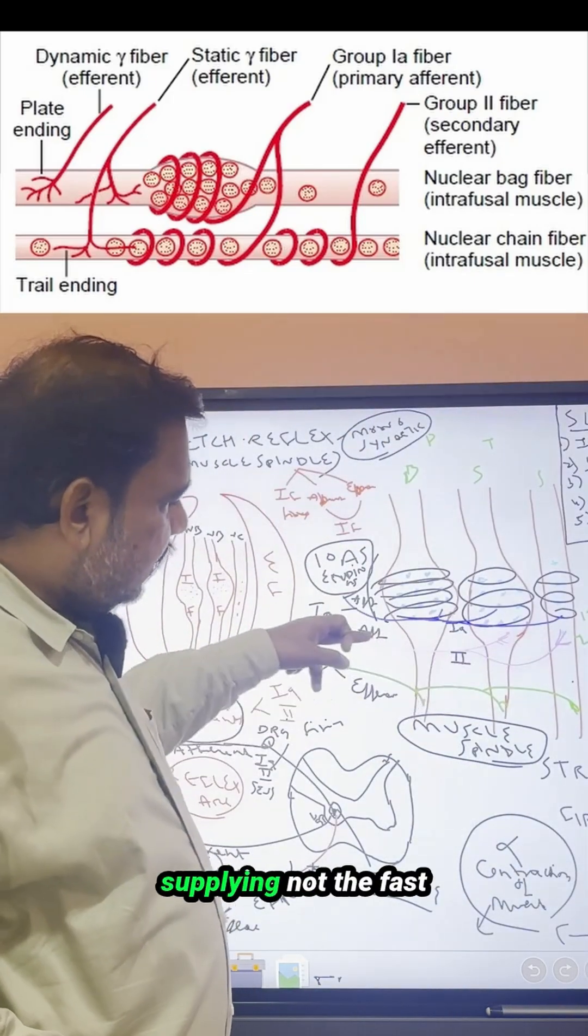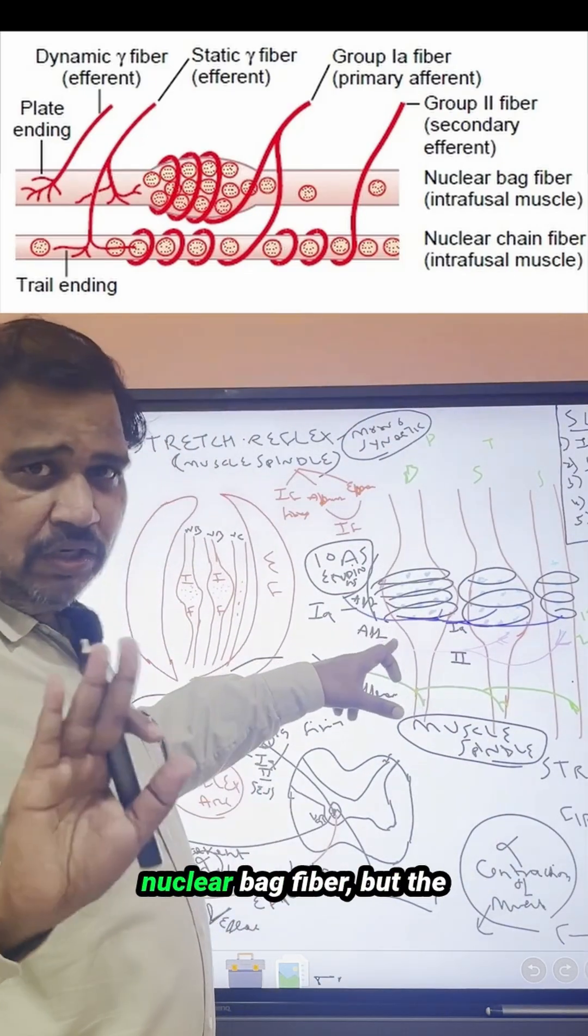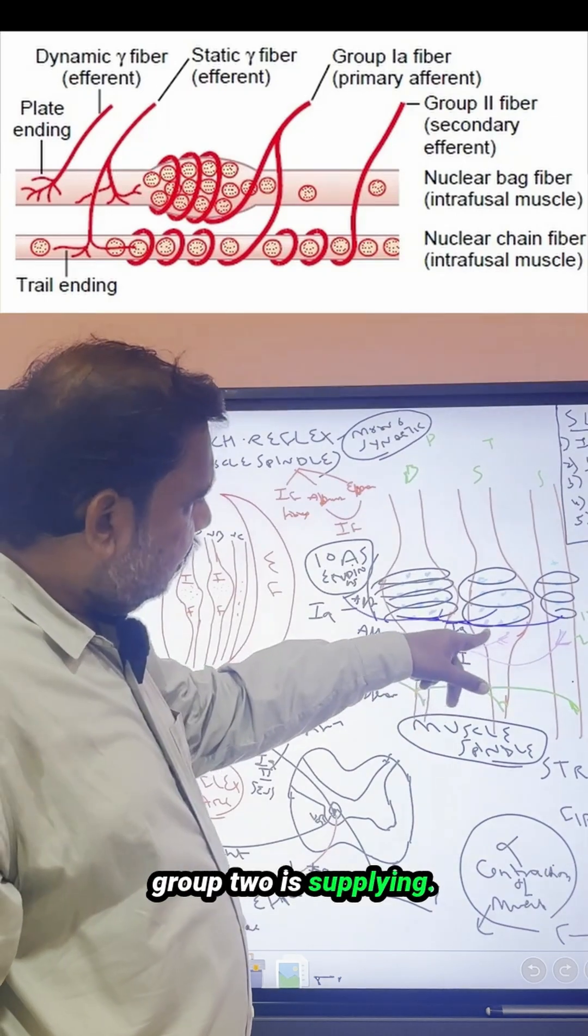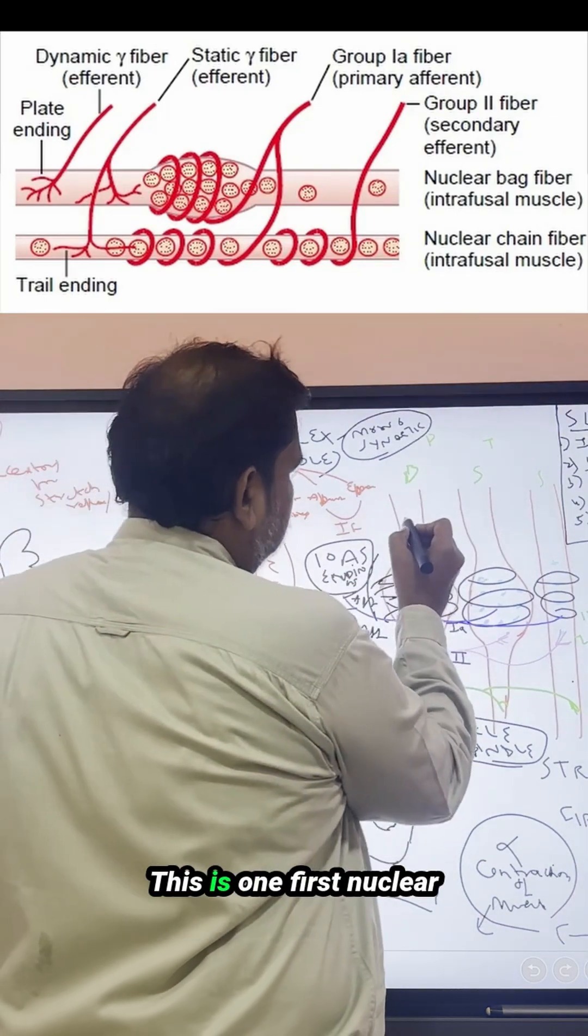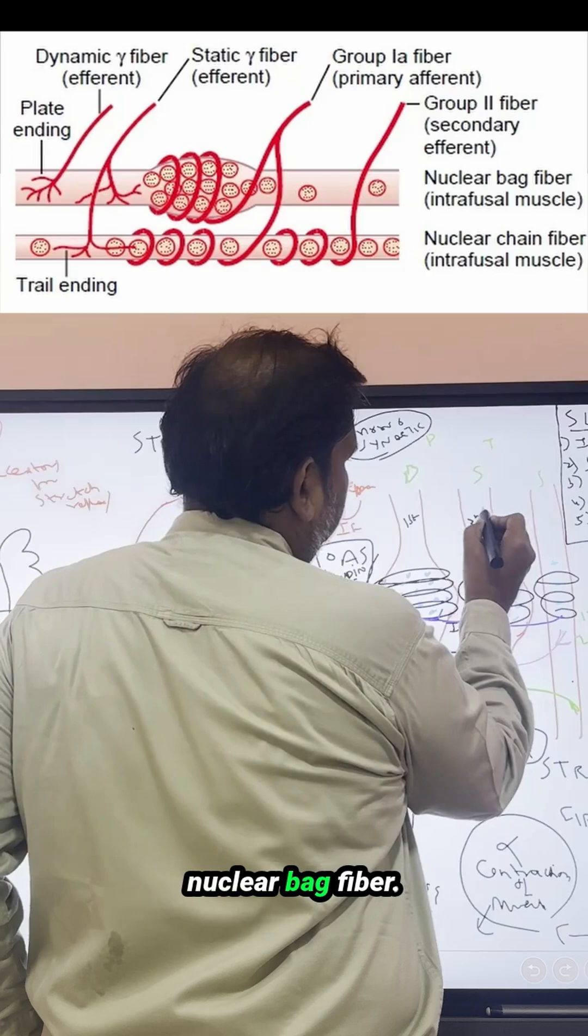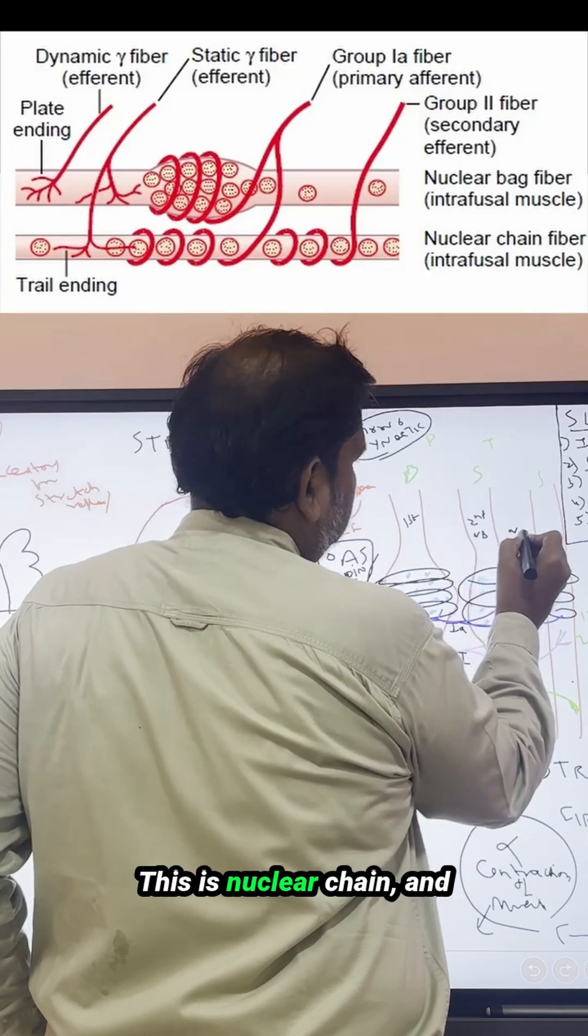This group two is supplying not the first nuclear bag fiber, but the group two is supplying - let us see - this is the first nuclear bag fiber, second nuclear bag fiber, this is nuclear chain.